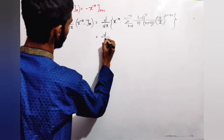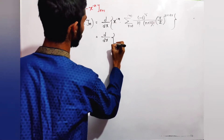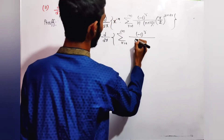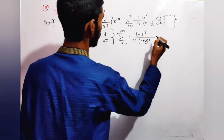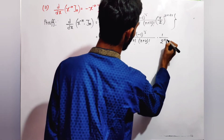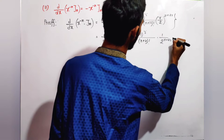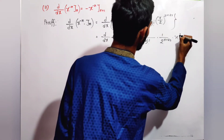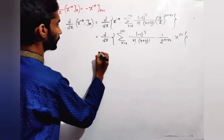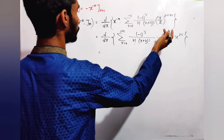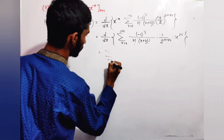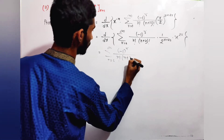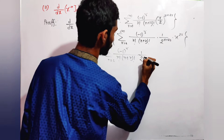Applying x^(-n) inside the sum, we get x^(-n) multiplied by the series: sum from r=0 of [(-1)^r / (r! · (n+r)!)] · (1/2)^(n+2r) · x^(n+2r). This simplifies since x^(-n) · x^(n+2r) = x^(2r), giving us [(-1)^r / (r! · (n+r)!)] · (1/2)^(n+2r) · x^(2r).